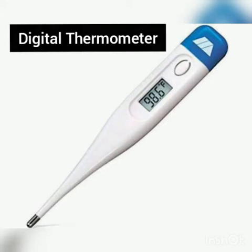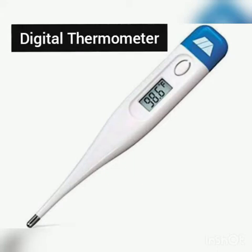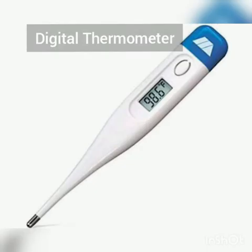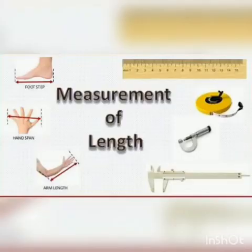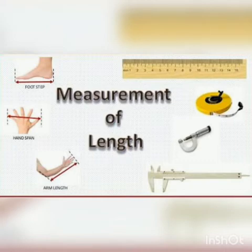These are some simple methods to measure length. Length is used for identifying the size of an object — it is a measure of how long an object is, or the distance between two points. The length of an object is its extended dimension, that is, its longest size. For example, the length of a ruler can be 15 centimeters.